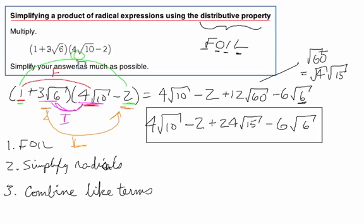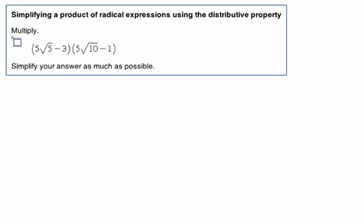One more example. Let's take a look. So again, we've got this problem. We've got to foil it. We've got to simplify the radicals. And step 3 is to combine like terms.